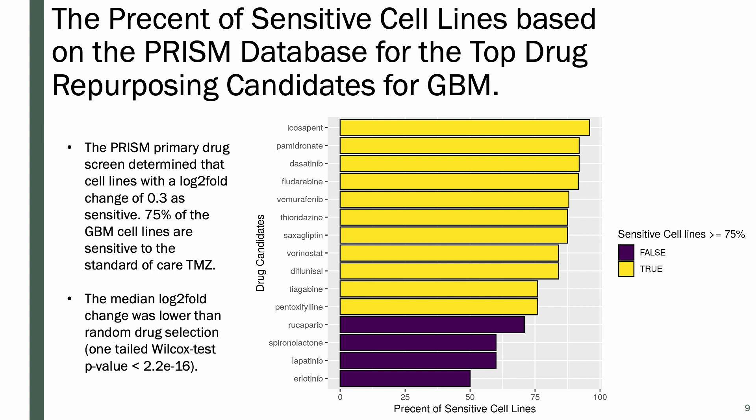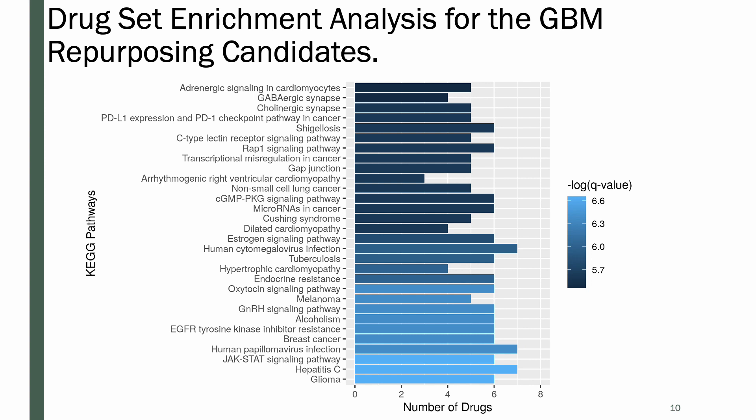Lastly, we did a drug set enrichment analysis with the drug repurposing candidates to look at their drug targets and see what biological pathways they were a part of. With this result, glioma was the top candidate, indicating that these drug repurposing candidates are perturbing pathways related to GBM.